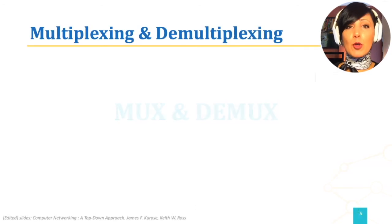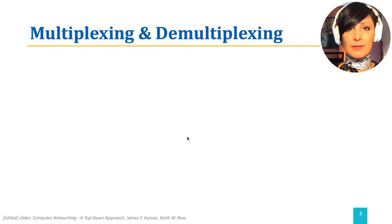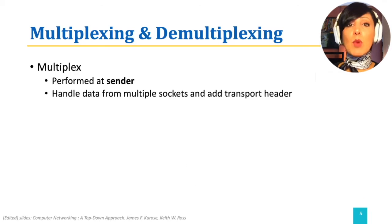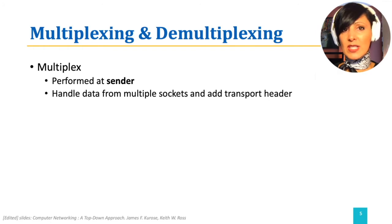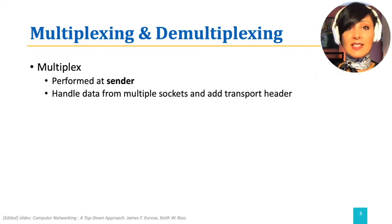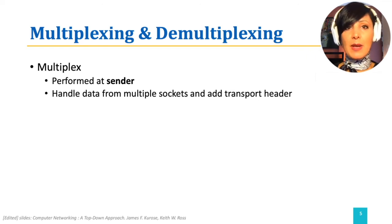Multiplexing is performed by the sender. The sender has multiple sockets that are communicating with different processes across the network. The sender gathers messages to be sent from the source applications from the process sockets, adds required header information to them, makes transport layer segments, and passes the segments to the network layer.